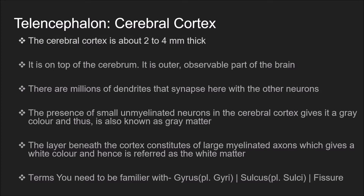The cerebral cortex is about 2-4 mm thick. It is on top of the cerebrum and is the outer observable part of the brain. There are millions of dendrites that synapse here with other neurons. The presence of small unmyelinated neurons in the cerebral cortex gives it a grey colour, and thus it is known as grey matter.